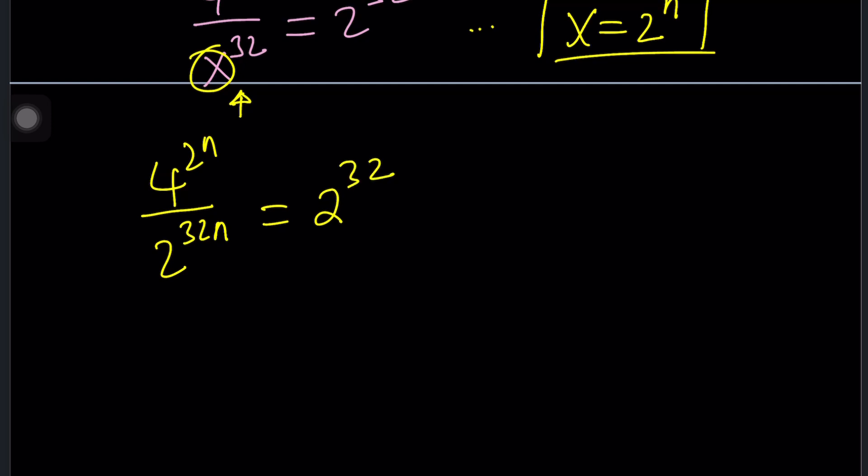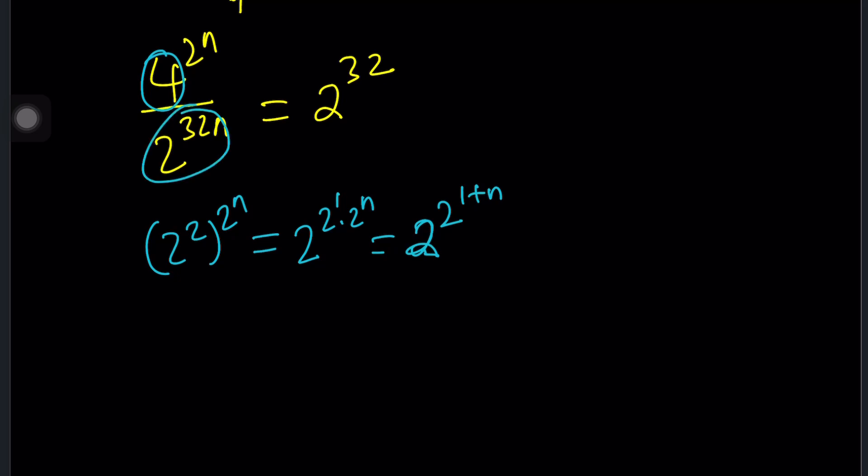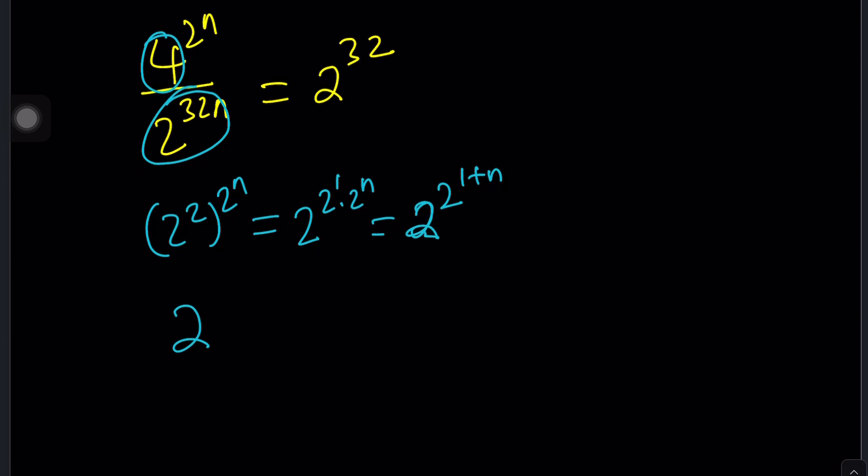We have 4 to the power of 2 to the power of n, and then x will be 2 to the power of n raised to the power of 32. So it's going to be 2 to the power of 32n equals 2 to the power of 32. Very interesting that these 32s come together. We're going to write this as 2 to the second power to the 2 to the n. That's just going to be 2 to the power 2 times 2 to the n, which is 2 to the power 2 to the power 1 plus n, or n plus 1.